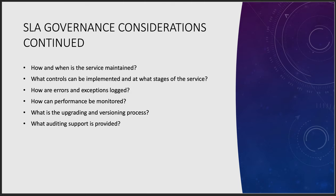How are errors and exceptions logged? Are we doing a try-catch on our errors? How can performance be monitored? You can make some really nice dashboards, but maintaining a historical dashboard becomes an interesting complication. What is the upgrading and versioning process? That can be huge because you can break things by upgrading to a different version. And then what kind of auditing support is provided?